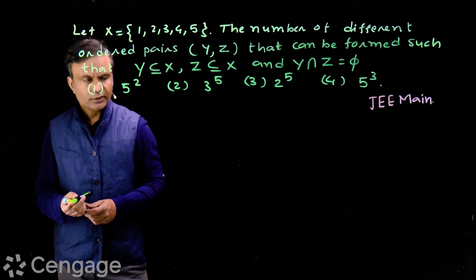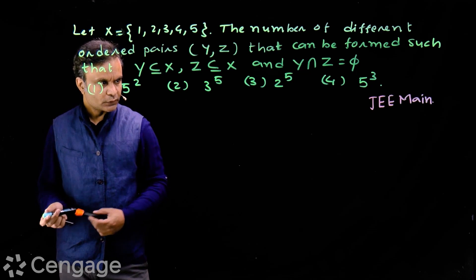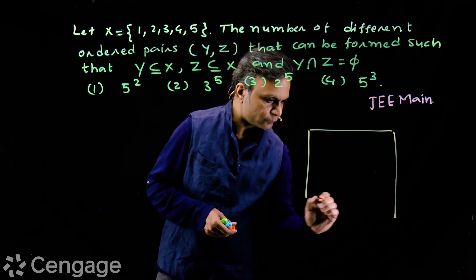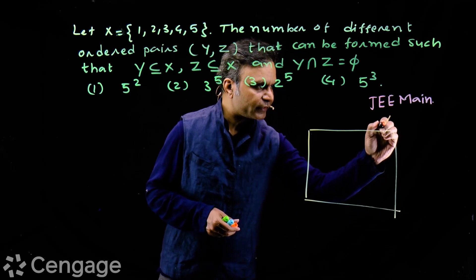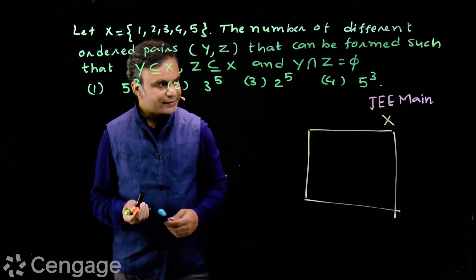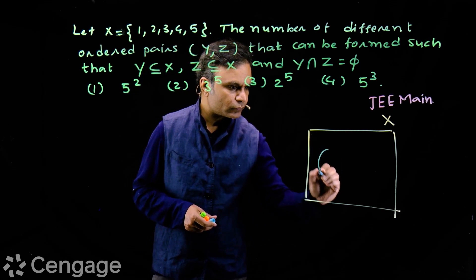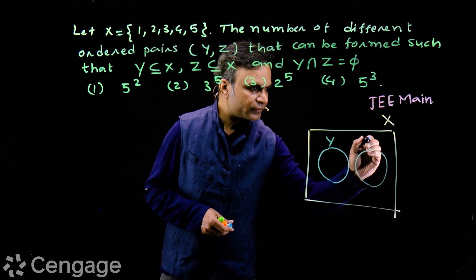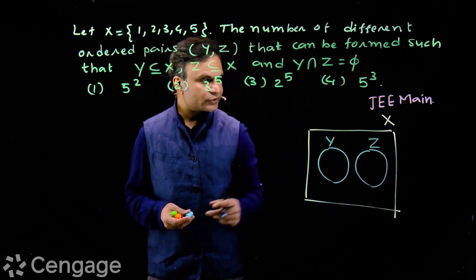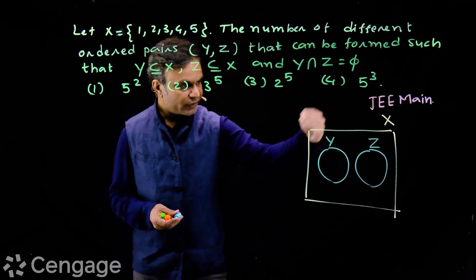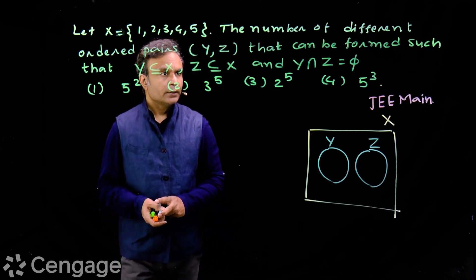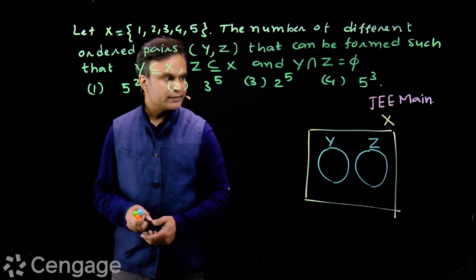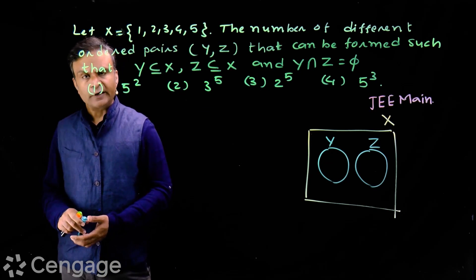Let's put this in the form of a Venn diagram. We have the universal set X, and Y and Z are subsets of set X. We put sets Y and Z inside it. Y and Z sets are disjoint. So we have this Venn diagram. We have to find the number of ways we can form these two sets Y and Z — we have to find ordered pairs of sets Y and Z.